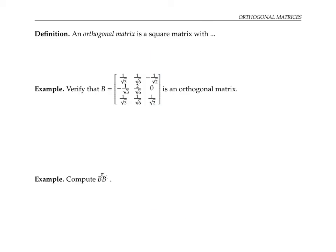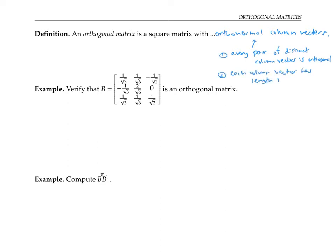An orthogonal matrix is a square matrix with orthonormal column vectors. Recall that a set of vectors is orthonormal if every pair of vectors is orthogonal and each vector by itself has length one. Recall that orthogonal means the same thing as perpendicular — it means the dot product of the two vectors is zero.